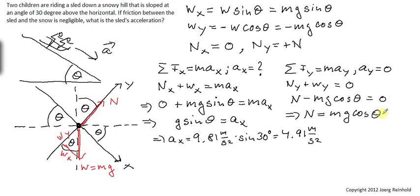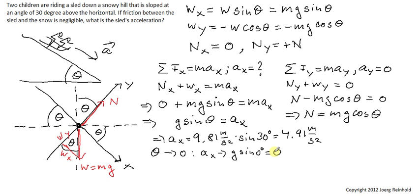Let's evaluate limiting cases. What happens if the angle theta goes to 0? Then Ax goes to g times sine 0°, and sine 0° is 0. So the acceleration is 0 on a level plane — that makes sense. The normal force goes to mg times cosine 0°, and cosine 0° is 1, so the normal force equals mg — just the weight on a level plane. This makes sense as well.